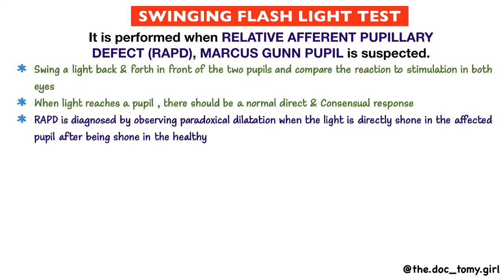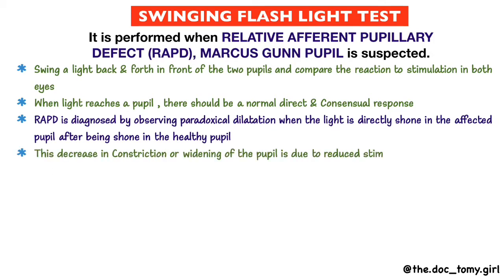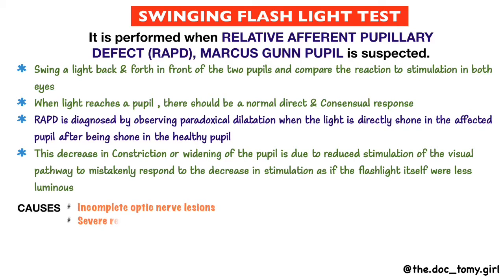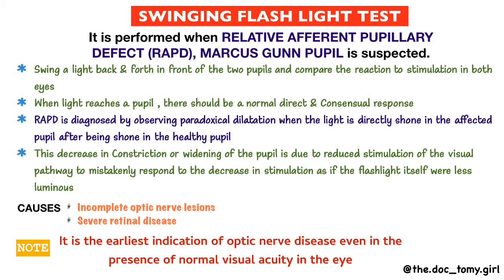The decrease in constriction or widening of the pupil is due to the reduced stimulation of the visual pathway, causing the pathway to mistakenly respond as if the flashlight itself were less luminous. The causes of RAPD are incomplete optic nerve lesions and severe retinal disease. Notably, it is the earliest indication of optic nerve disease, even in the presence of normal visual acuity.